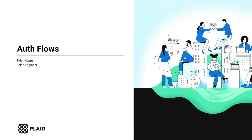My name is Tyler Knappe and I'm a sales engineer here at Plaid. Plaid allows your users to instantly verify accounts at their financial institution by using their online banking credentials. This results in a higher user conversion rate by removing the chance of fat-fingering account and routing numbers and replacing it with information users likely know offhand — their bank username and password.